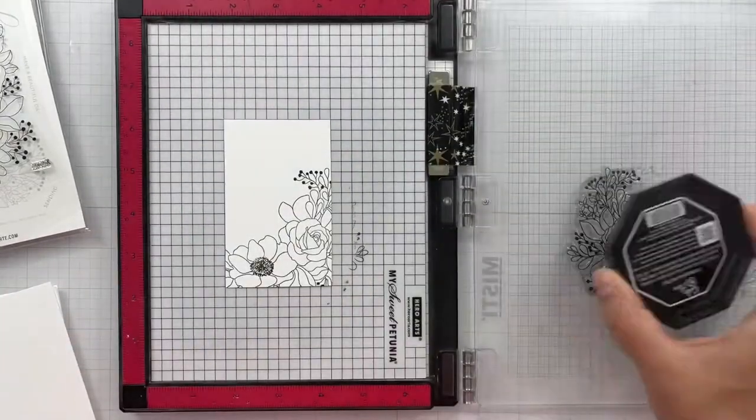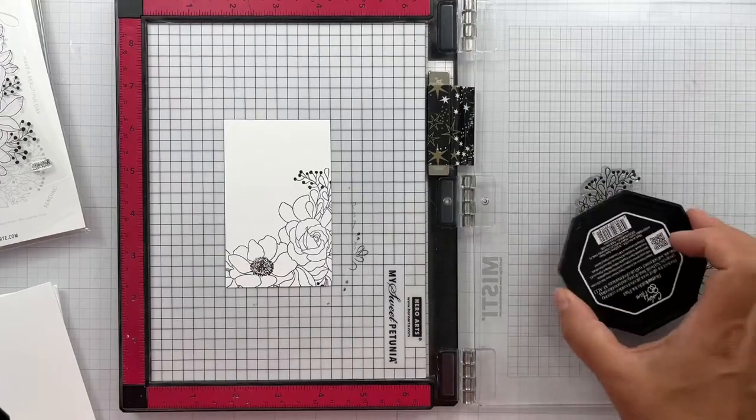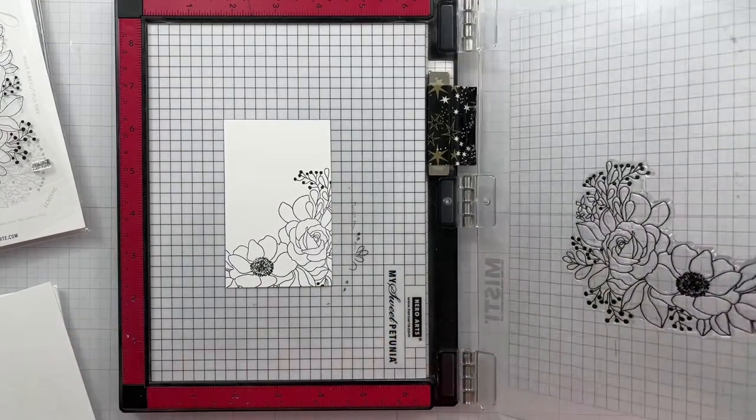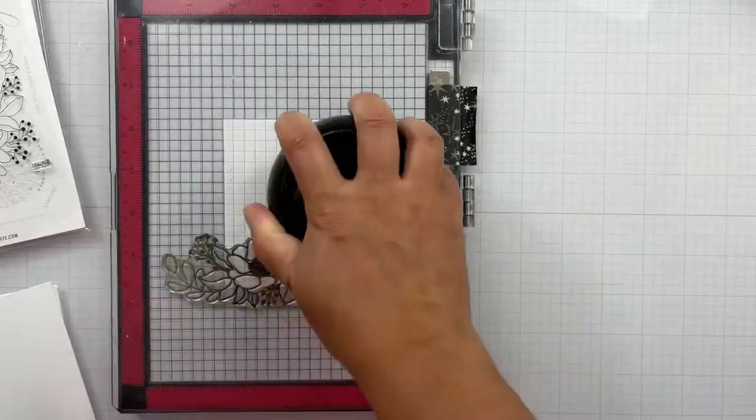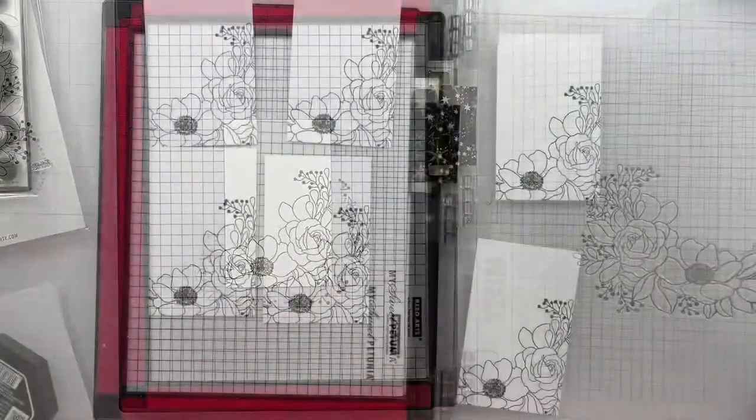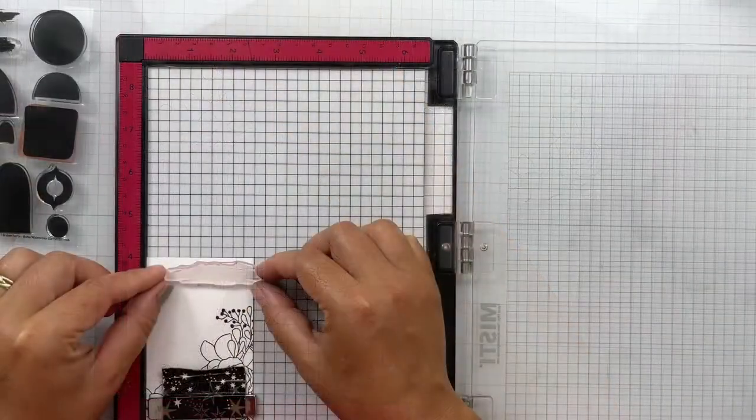I didn't want that whole image, just a portion of that image. So that's why I've set it up in the MISTI. I have a piece of sticky grid underneath that cardstock to keep it in place. And then once I have that outline from this initial stamping,